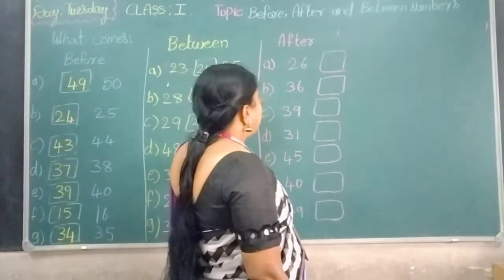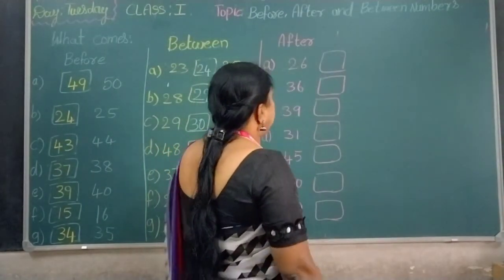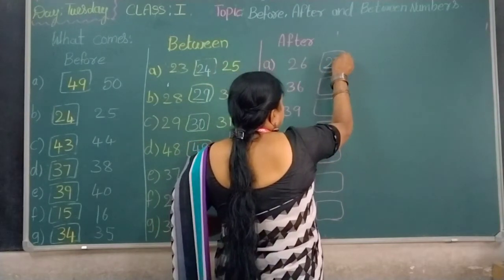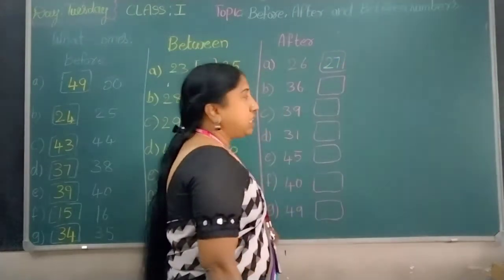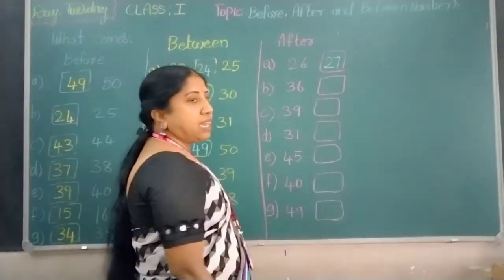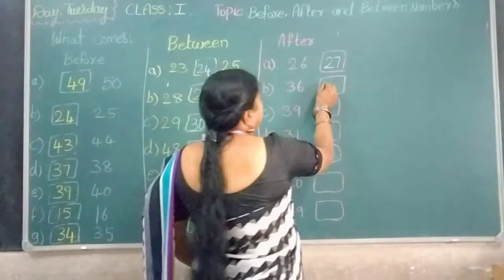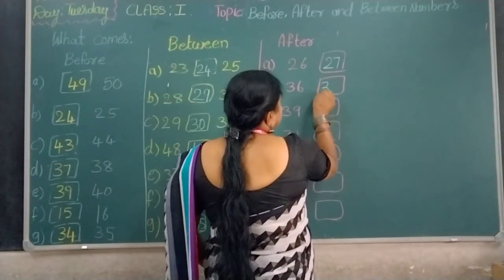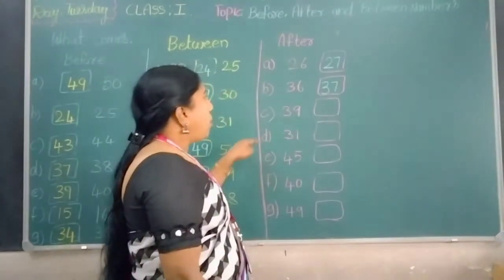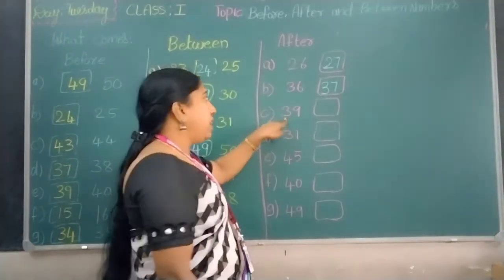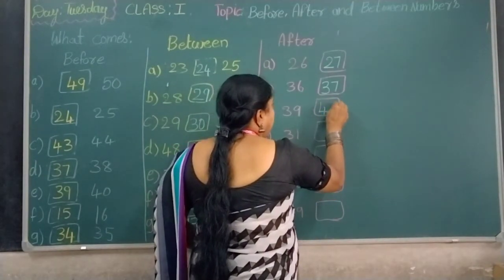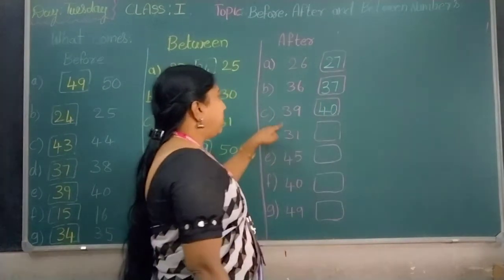After. What comes after? Number 26: 27 comes after 26. What comes after 36? 37 comes after 36. What comes after 39? Number 40 comes after 39. What comes after 31? Number 32 comes after 31.